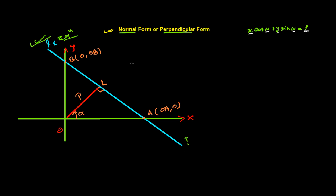Let's derive it. Before that, I want to show something here. If the perpendicular makes angle alpha with the x-axis, then the angle between the perpendicular and line L1 at point L is 90 minus alpha, since a right angle is 90 degrees. Because the perpendicular is 90 degrees, this remaining angle is also alpha.